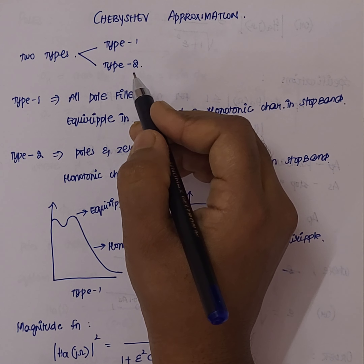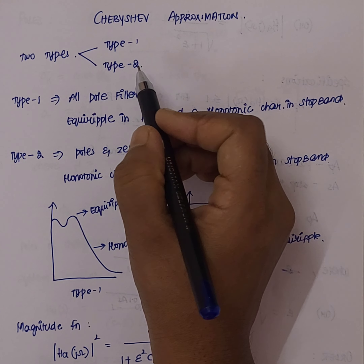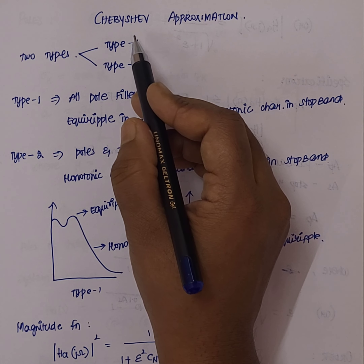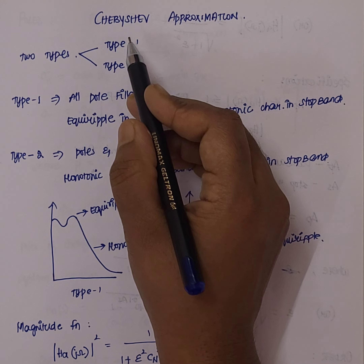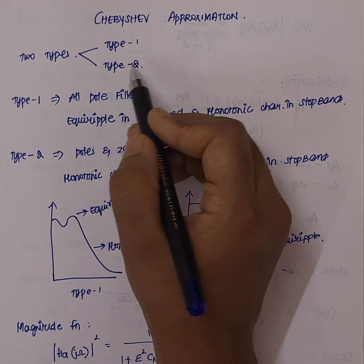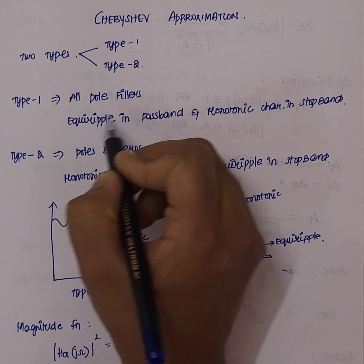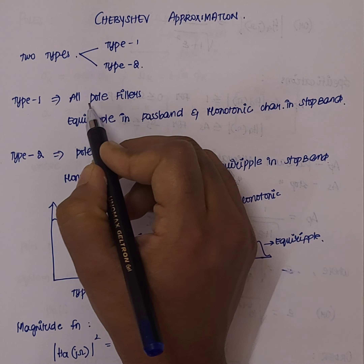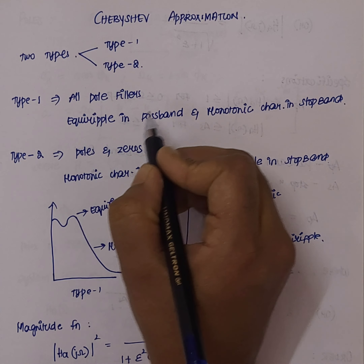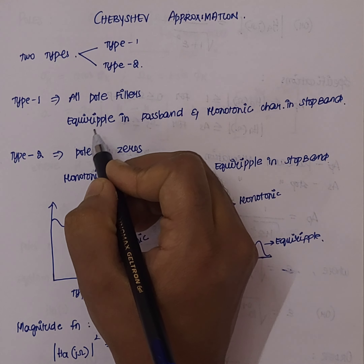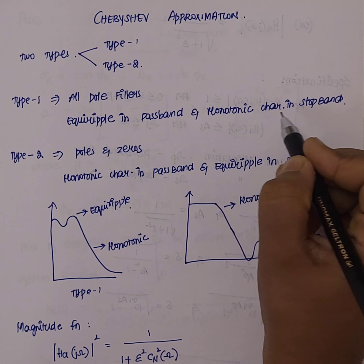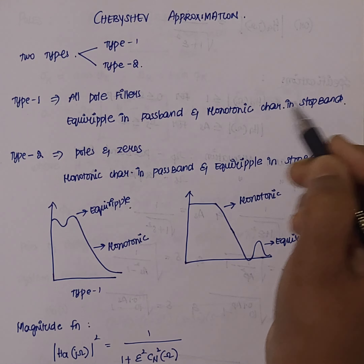In the last video, we talked about the Butterworth filter. In this video, we will talk about the Chebyshev filter. We have two types: Type 1 and Type 2. Type 1 refers to all-pole filters, where the pass band has equal ripple and the stop band has monotonic characteristics.